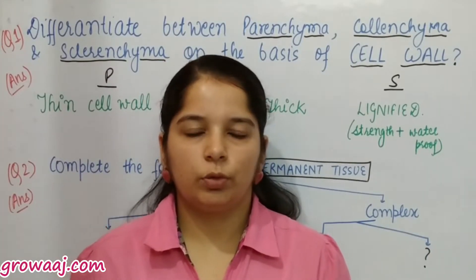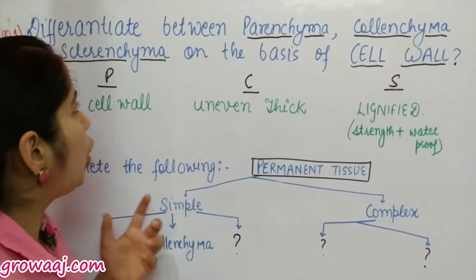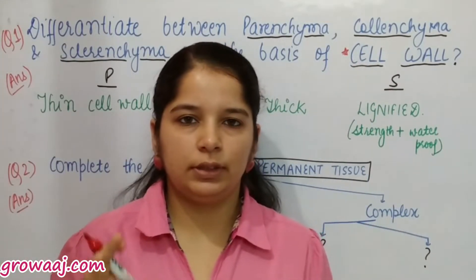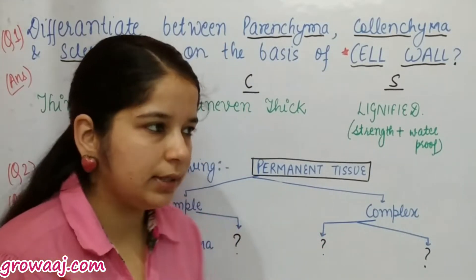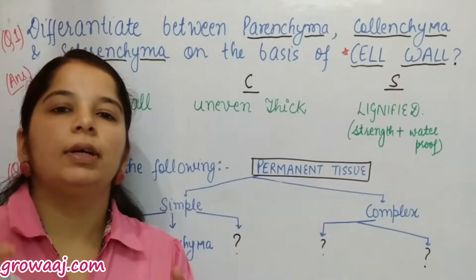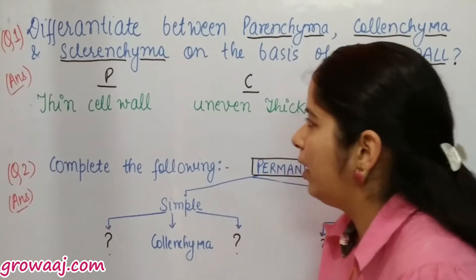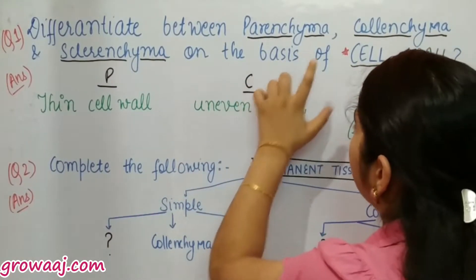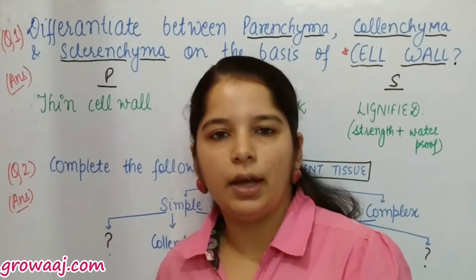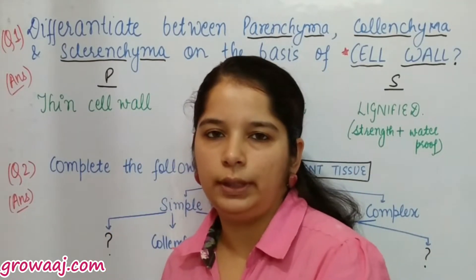In today's lecture, let's discuss some questions related to tissues. The first question is: differentiate between parenchyma, collenchyma, and sclerenchyma on the basis of cell wall. We need to answer only on the basis of cell wall — no need to explain all points. In parenchyma, the cell wall is very thin, and these are living cells.